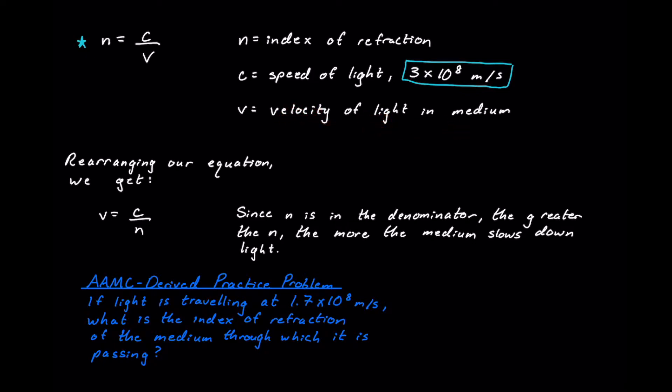Okay, rearranging our equation we can solve actually for V and kind of see the relationship that n has on the speed of light. And because n is in the denominator, the greater this index of refraction, the more the medium will slow down that light actually. So the higher the index of refraction, the slower light goes.